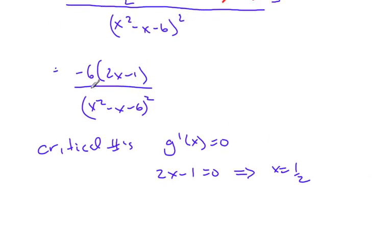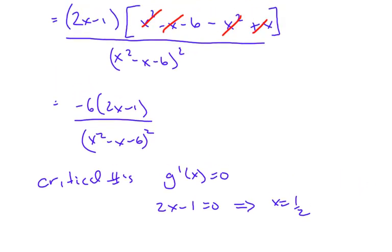The denominator is not defined at x = 3 and x = -2. So there's only one critical number, x = 1/2.